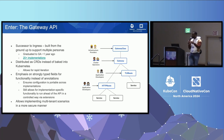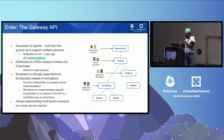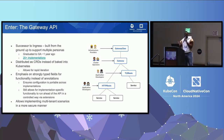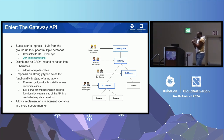Because we implemented Gateway API this way, it allows you to have multi-tenant scenarios in a more secure manner. There are resources like reference grants and the overall layout allows you to be more secure in handling multi-tenant use cases. So this is all great stuff — hopefully this is intriguing enough to make you ask questions about how you can adopt Gateway API and how this might fit in your organization.